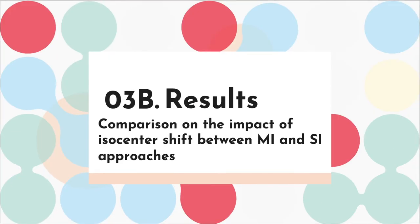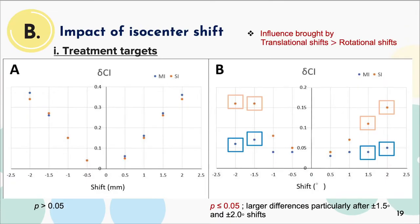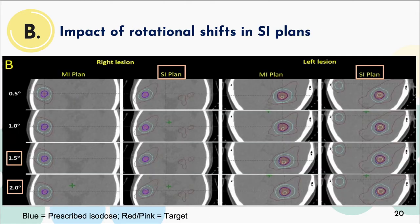The next part presents results regarding the impact of isocenter shifts. With regard to the PTV, change of CI for all magnitudes of translational shifts were similar between approaches. For the rotational shifts, the SI plans showed significantly greater change of CI after all extensive shifts, with differences being exaggerated particularly after 1.5 and 2 degree shifts. The figure shows that deviations between the prescribed blue isodose line and the red PTV contour lines were further magnified with increased magnitude of shifts in SI plans, whereas those of MI plans could be kept more stable.